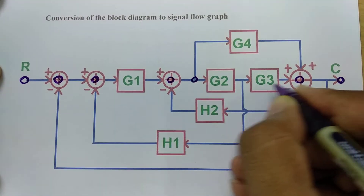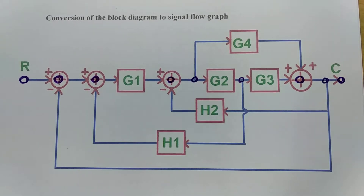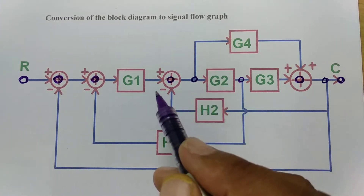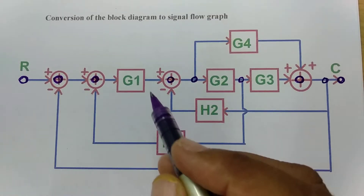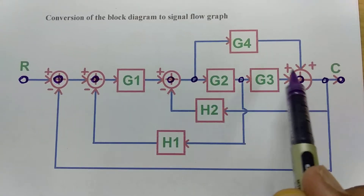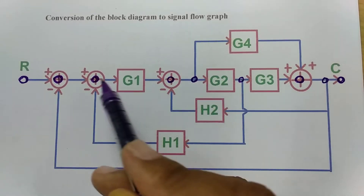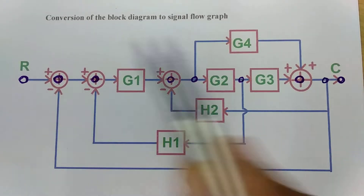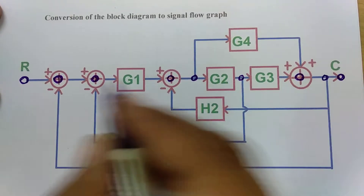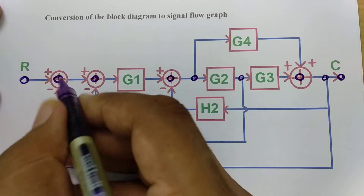The third rule is to assign nodes to all the joints. I am assigning nodes to all the joints here. Now, we should also assign nodes in between two consecutive blocks, but here there are no consecutive blocks, so we cannot assign any. To summarize: first, assign nodes to all inputs and outputs; second, assign nodes to all adders; third, assign nodes to all joints; and last, assign nodes between two consecutive blocks if they exist.